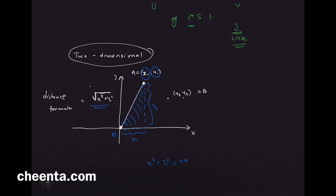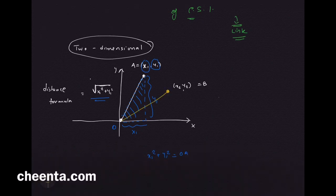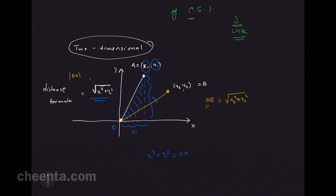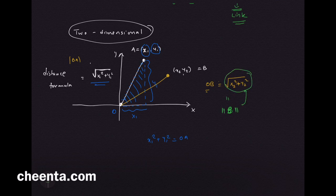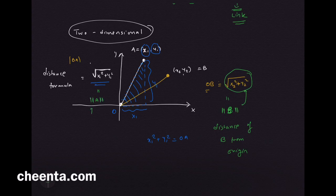This formula is called the distance formula, and it is nothing but a disguised form of the Pythagorean theorem. Similarly, the length of OB is sqrt(x2² + y2²). We can abbreviate these using the notation ||B|| for the distance of B from the origin, and ||A|| for the distance of A from the origin.